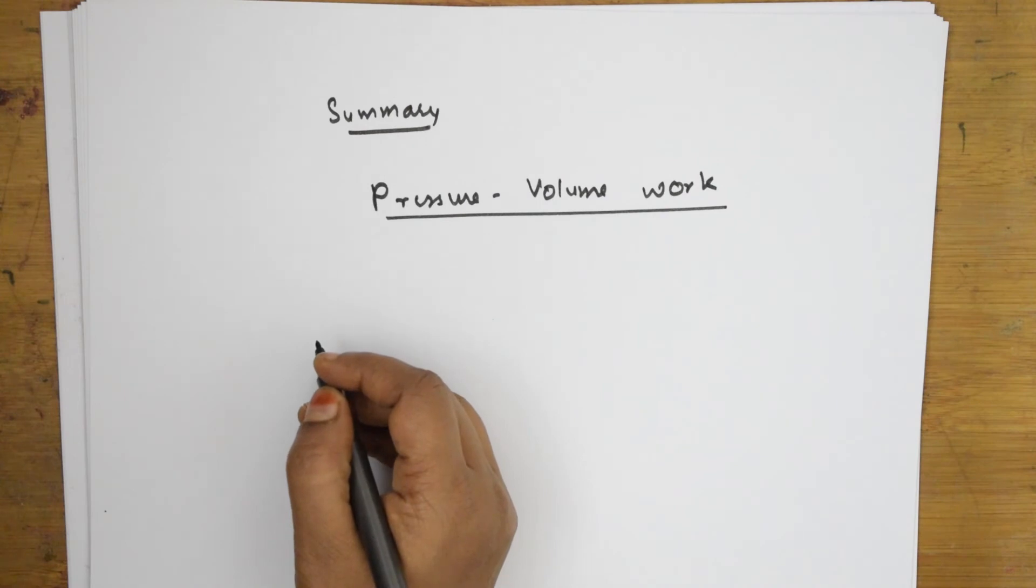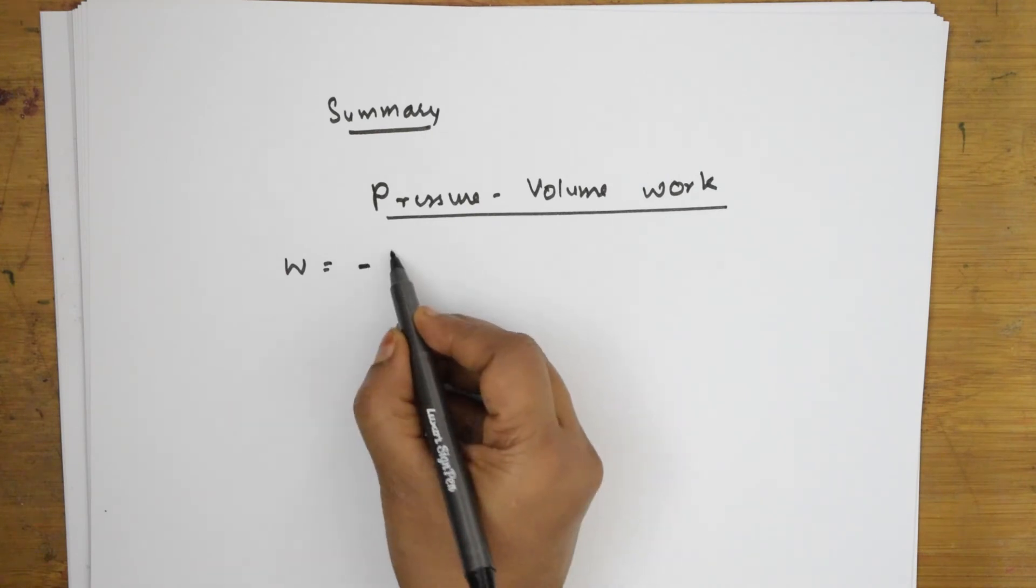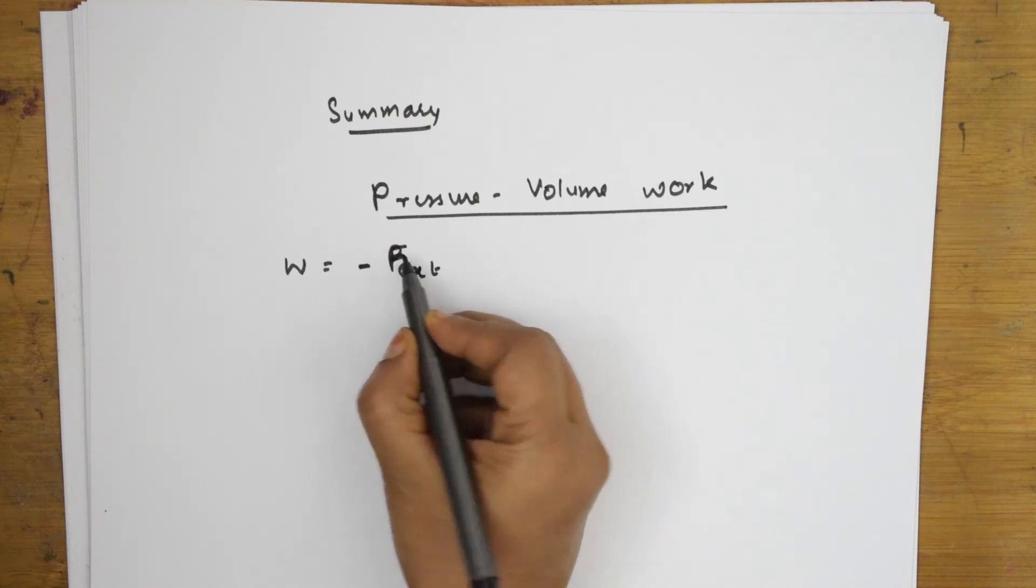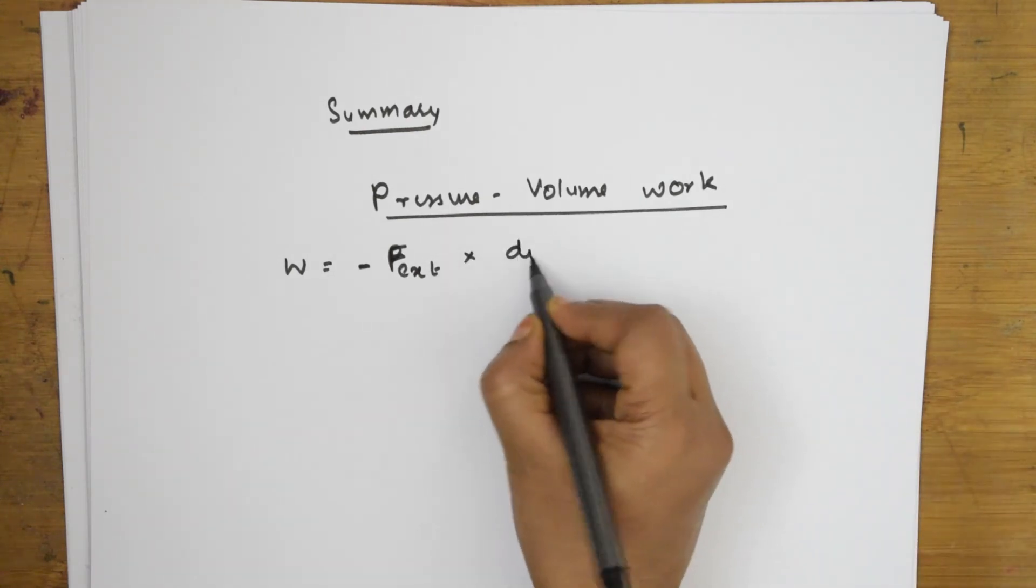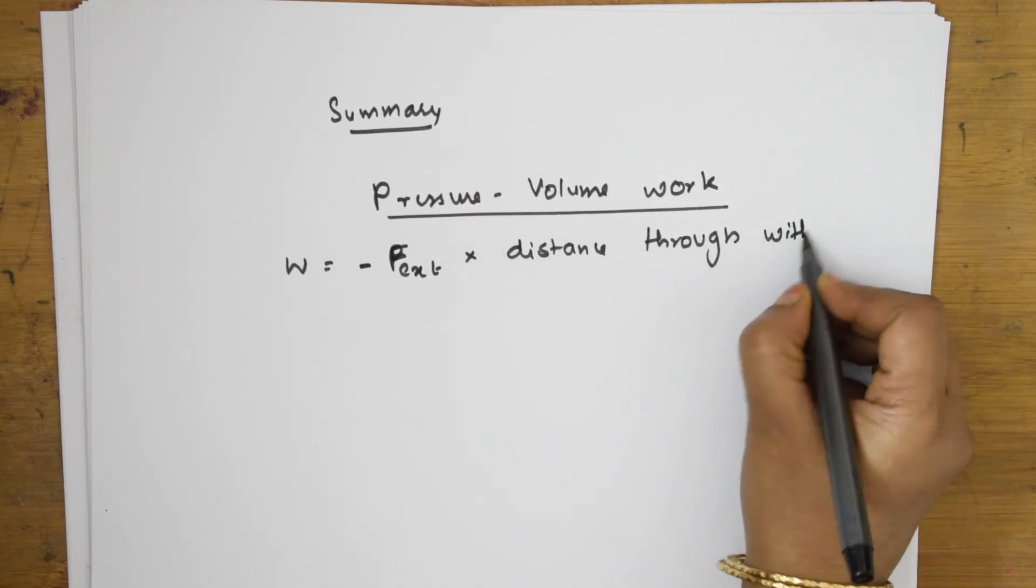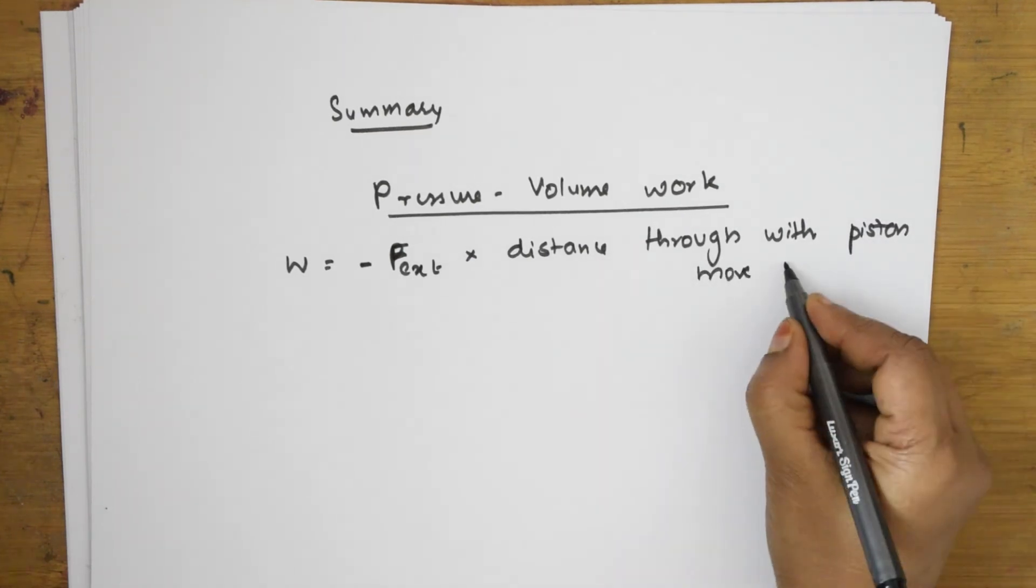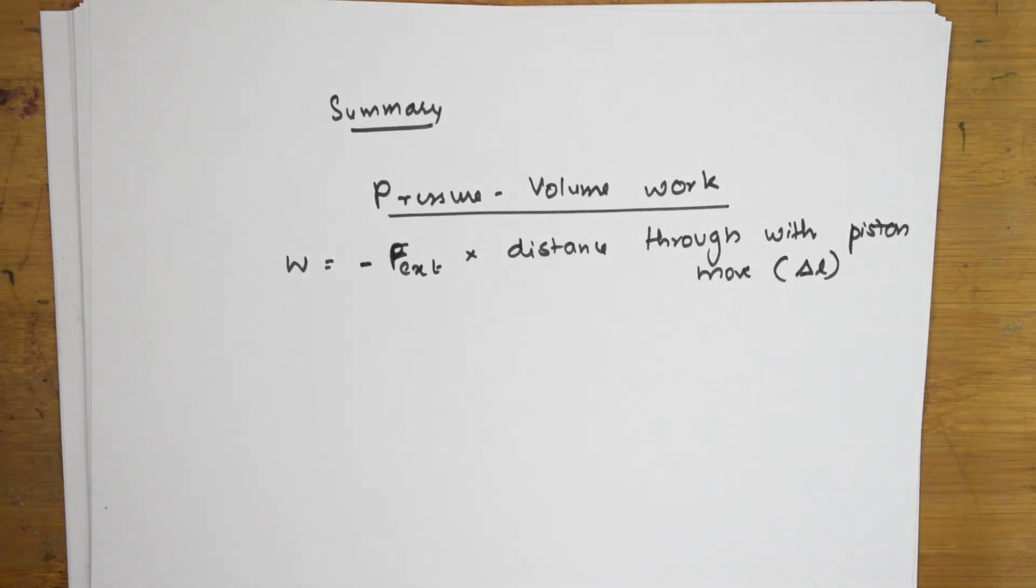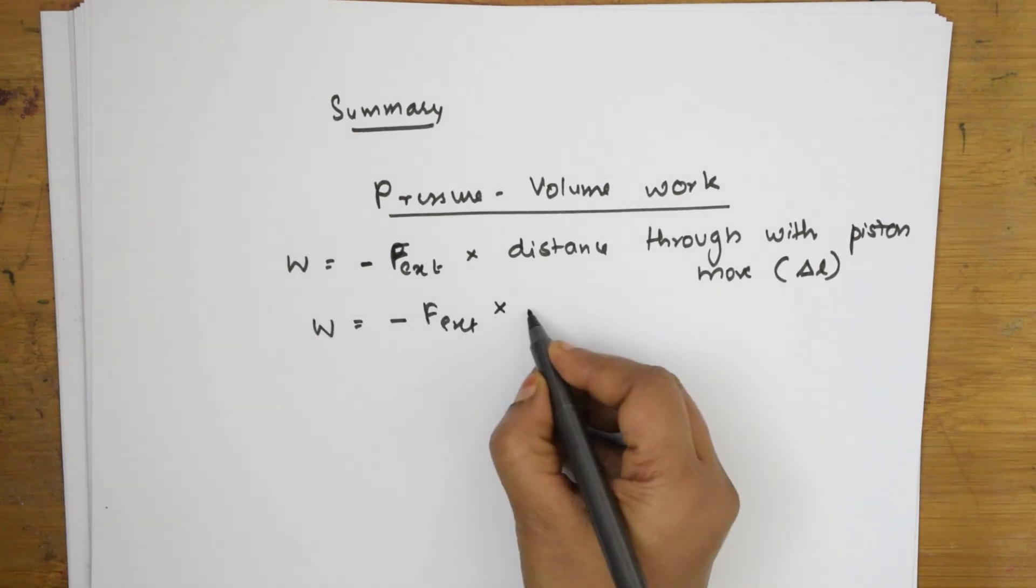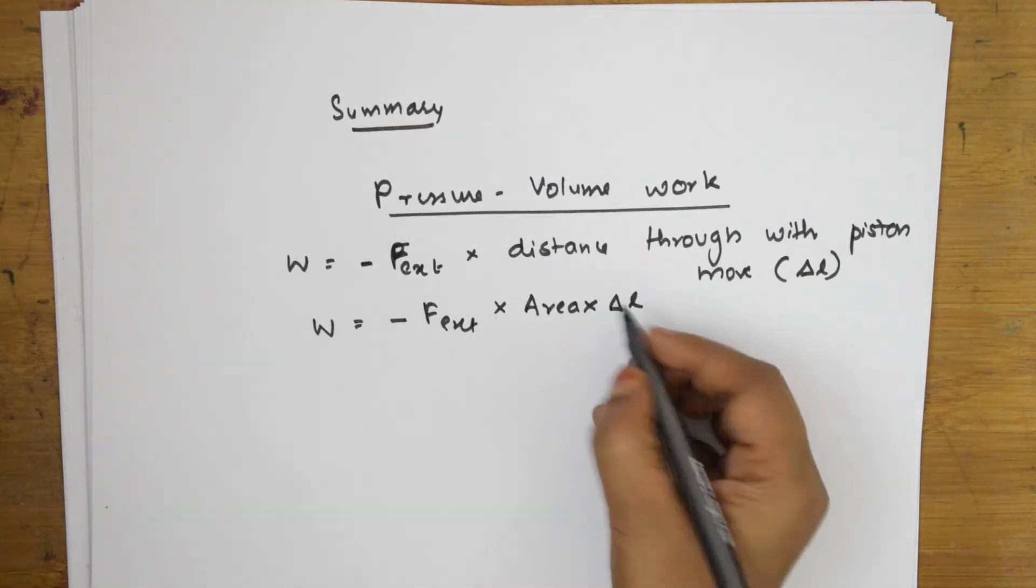So, how do we work? You know, it is a result of volume change against external pressure, isn't it? Right. So, W is equal to, I will write in this terms also, P external or you can write force external. Force external into distance through which piston moves. Distance through which piston moves. So, this is the first case which I have taken. Delta L. F into D. I am writing in that term.